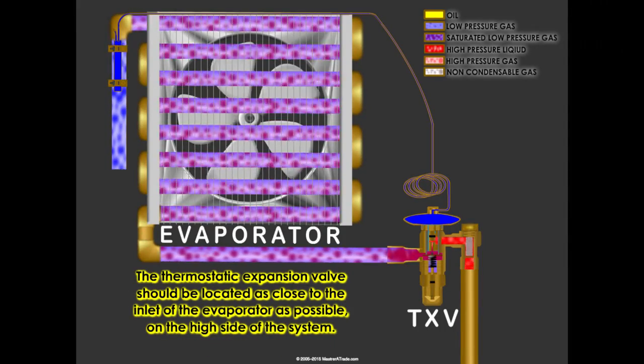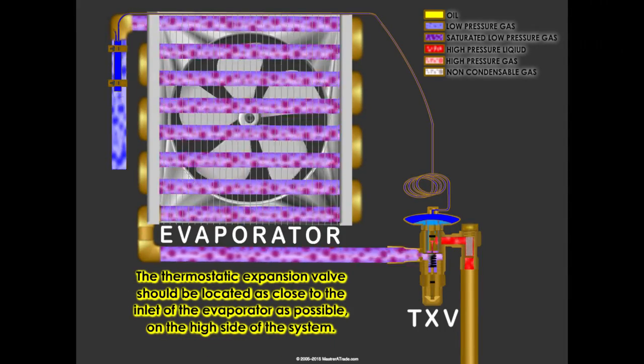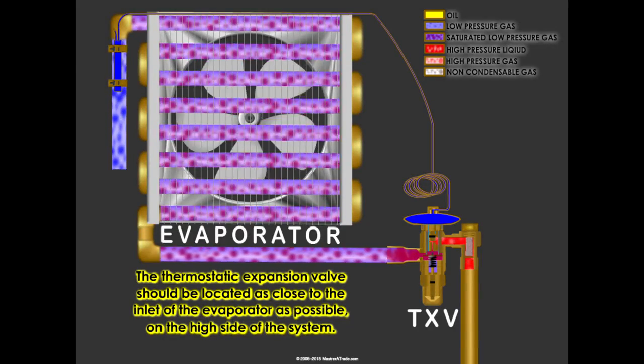The thermostatic expansion valve should be located as close to the inlet of the evaporator as possible on the high side of the system.